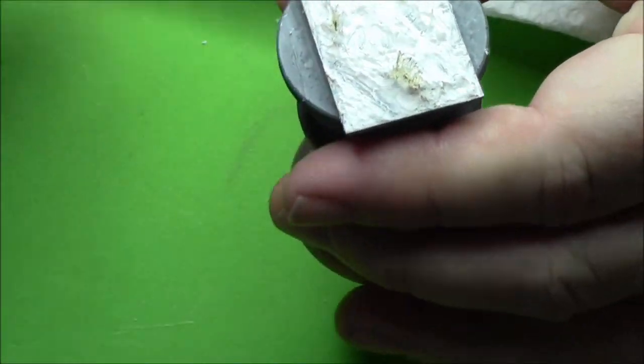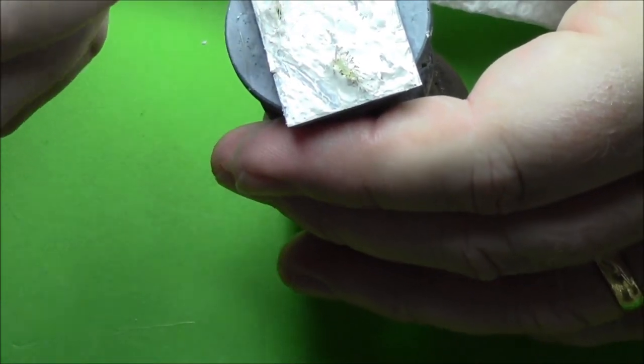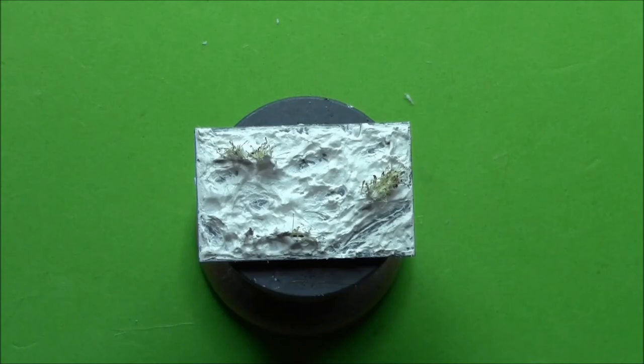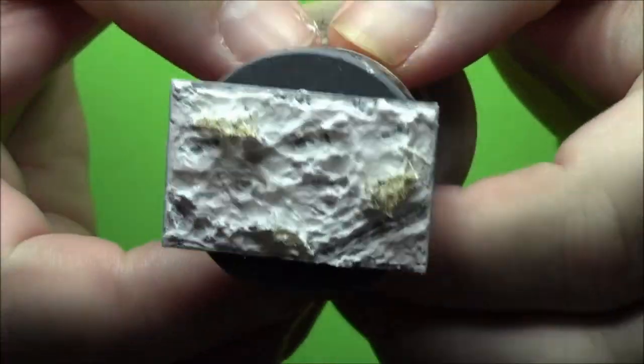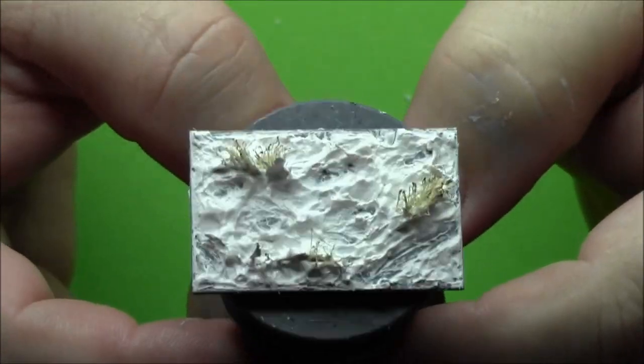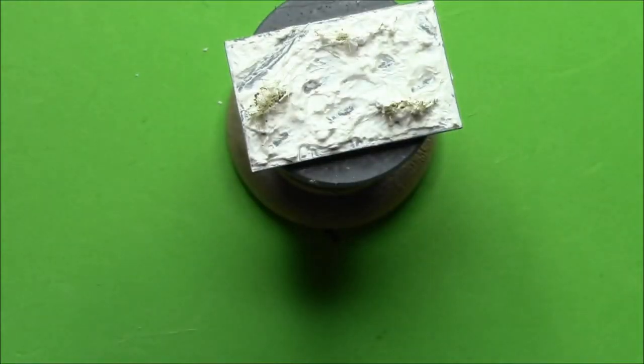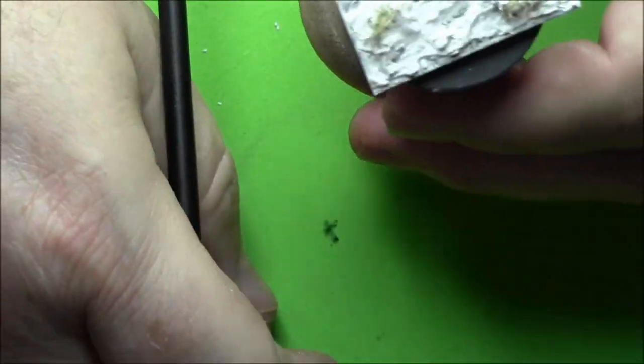Then you just use the tip of a paintbrush and make your wheel ruts and your footprints and other areas where the snow has been disturbed. When you put the gesso on, you don't want to do it like you're making a ship model where everything is nice and pointy. You want to round off the raised edges but still have a lot of different texturing on there.